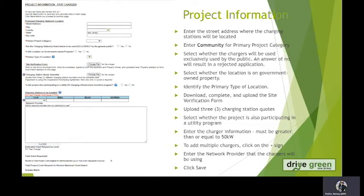The next step is to download the site verification form. This button is a link in SAGE. You will download it and then have the property owner fill it out. This is to verify that the property owner is okay with you installing charging stations for five years on their property. Please now submit your three charging station quotes. Please ensure that they are three comparable quotes from three different vendors. If you are utilizing a cooperative purchasing agreement, then you can just upload the one.